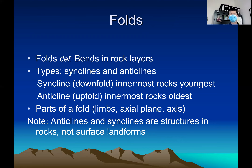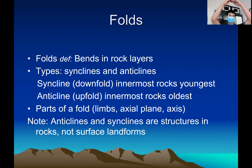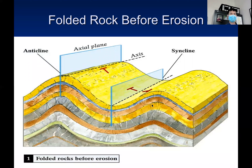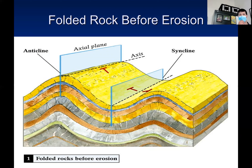The first thing we're talking about is folds. A fold is just a bend in a rock layer — if you see something that's bent, that's called a fold. There are two types of folds: a syncline, which is a down-fold, and an anticline, which is an up-fold. You can think of an anticline as a hill and a syncline like a valley. This isn't how all hills and valleys are made, but that makes it easier to think about.